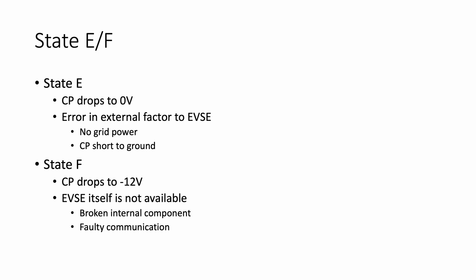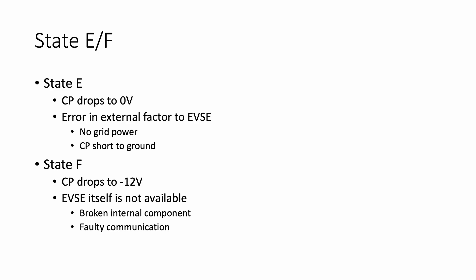In state E, the control pilot drops to zero volts, indicating an error external to the EVSE — for example, no grid power or the control pilot is shorted to ground. In state F, something inside the device itself is faulty, and a minus 12 volt signal is generated to distinguish it from everything else. The control pilot both determines the state of the charger and communicates how much the car can charge — it is the charger that ultimately determines how much the car will be able to request and receive.